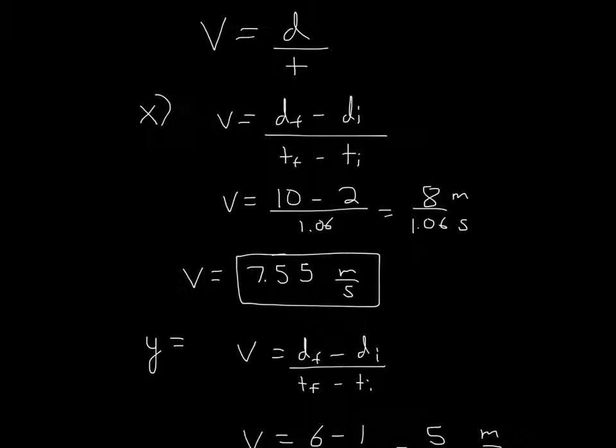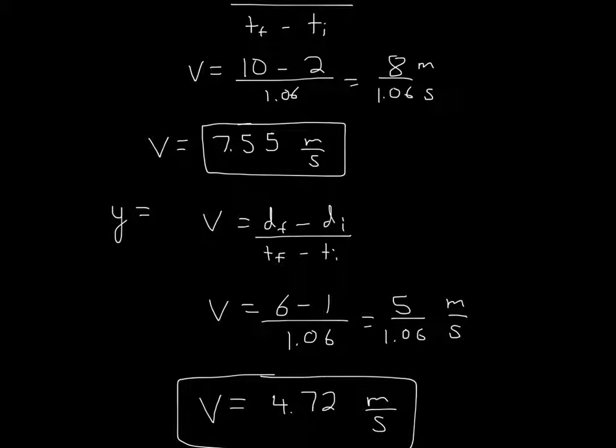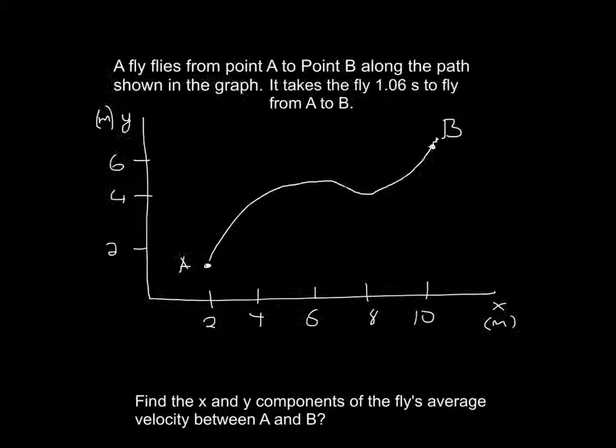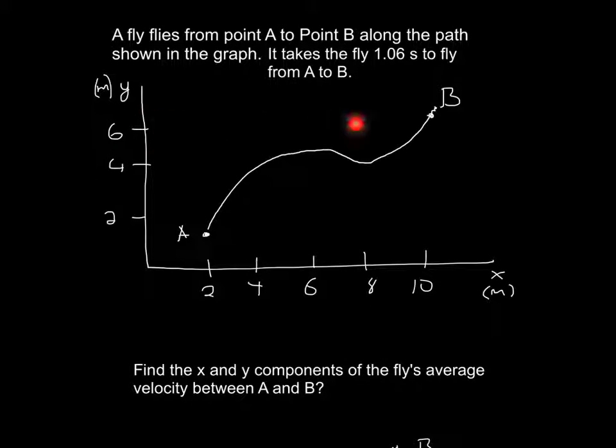Now we do the y part, and the y part is once again the same. Velocity is equal to distance over time. Velocity is equal to 6 minus 1. This is actually at 6. It looks a little above it, but it's supposed to be at 6.